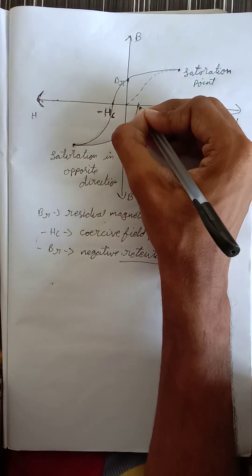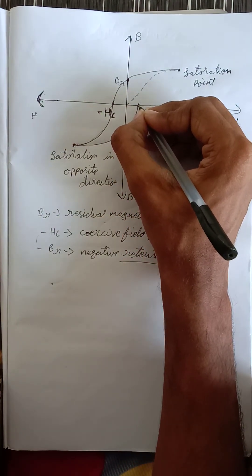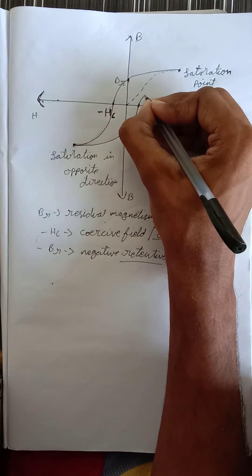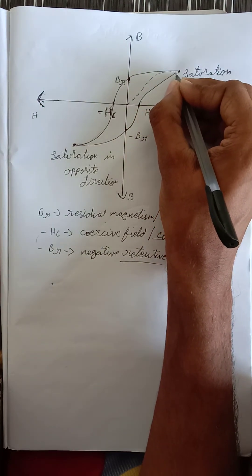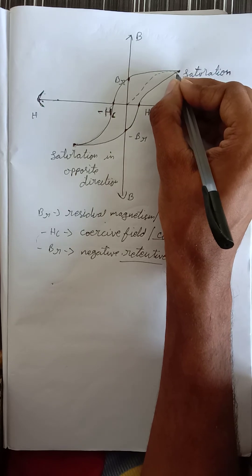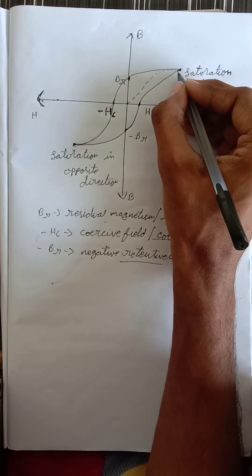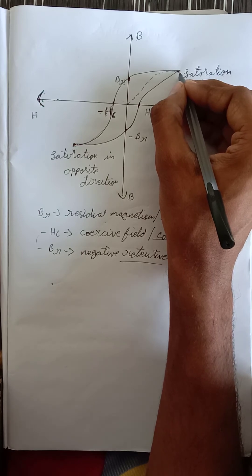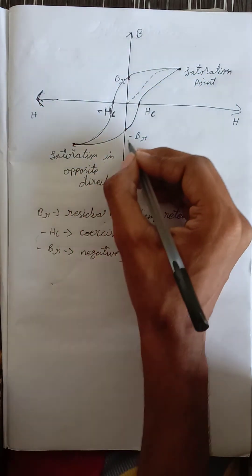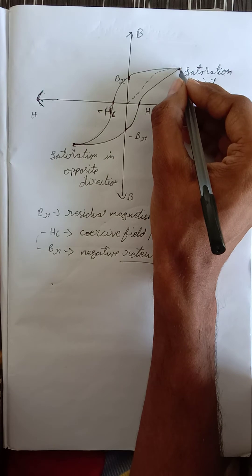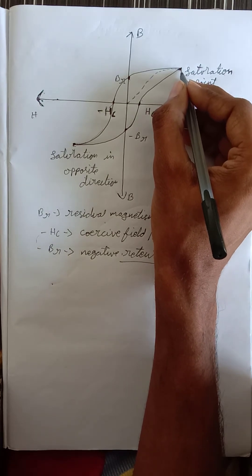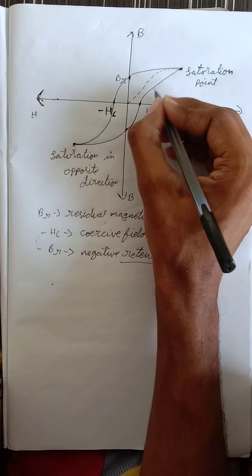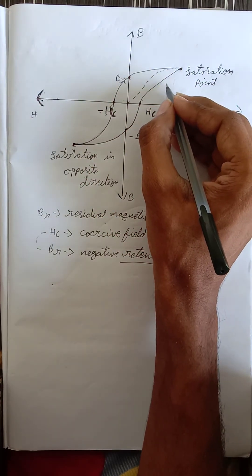When we further increase the positive magnetic field in the material, it magnetizes and reaches back to the starting saturation point, completing a cycle or loop. This cycle or loop is called the hysteresis loss curve or hysteresis loop.